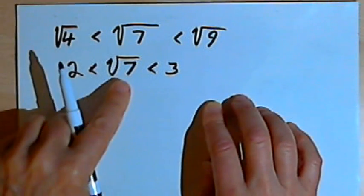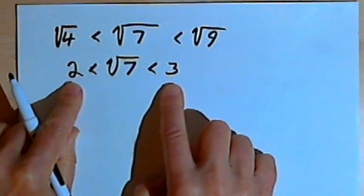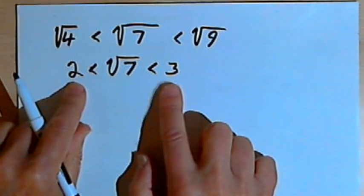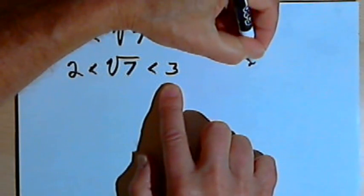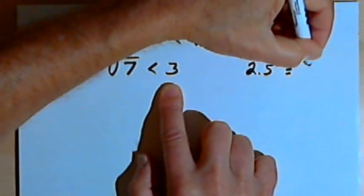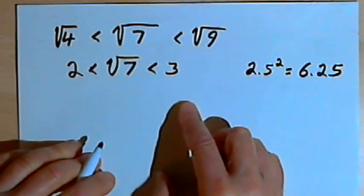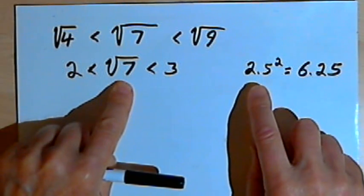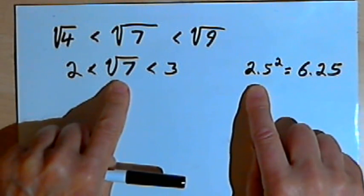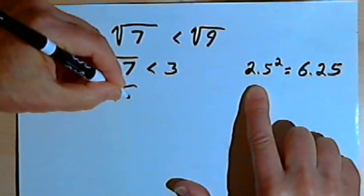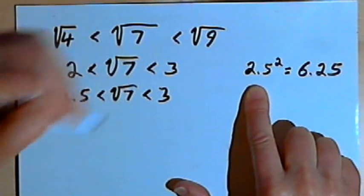The square root of 7 is somewhere between 2 and 3. Looking for a number in between, right in the middle would be 2.5. I'll take 2.5 and square it — 2.5 squared is 6.25. Since 6.25 is less than 7, the square root of 6.25, or 2.5, is less than the square root of 7. So now I can write: 2.5 < square root of 7 < 3.